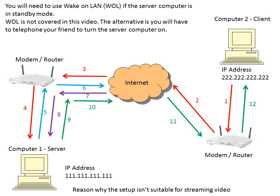You can use this to bypass internet restrictions if you're at school or at work, because effectively all the computer sees at work or school is that you're connected to your home network — it doesn't actually know what you're doing whilst you're connected to your home network. Equally, you can download software which is region-locked if computer 1, the server, is in a different country. If you want a faster connection, theoretically you should set up an OpenVPN client and server, which I'll be talking about in video 6.